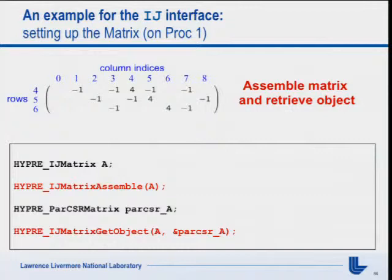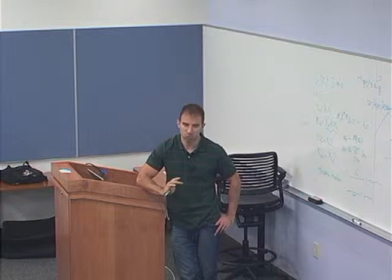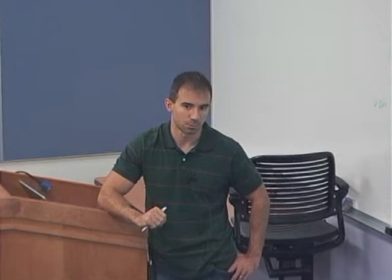Hyper does not support matrix-free computation for unstructured grids because the main solver, algebraic multigrid, uses actual matrix entries to define coarse spaces and interpolation operators in an essential way. For structured cases, constant-coefficient stencil solvers do not need to assemble the matrix. Here are the four interfaces — struct, S-struct, FEI, IJ — and which solvers are available for each: AMG is available in all interfaces except struct; conjugate gradient and GMRES are always available but should be used with preconditioners.